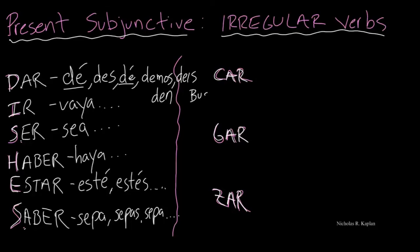that C-A-R will change to a Q-U-E. If we have a verb like pagar, that G-A-R will change to a G-U-E. And if we have a verb like comenzar, that Z-A-R will change to a C-E.